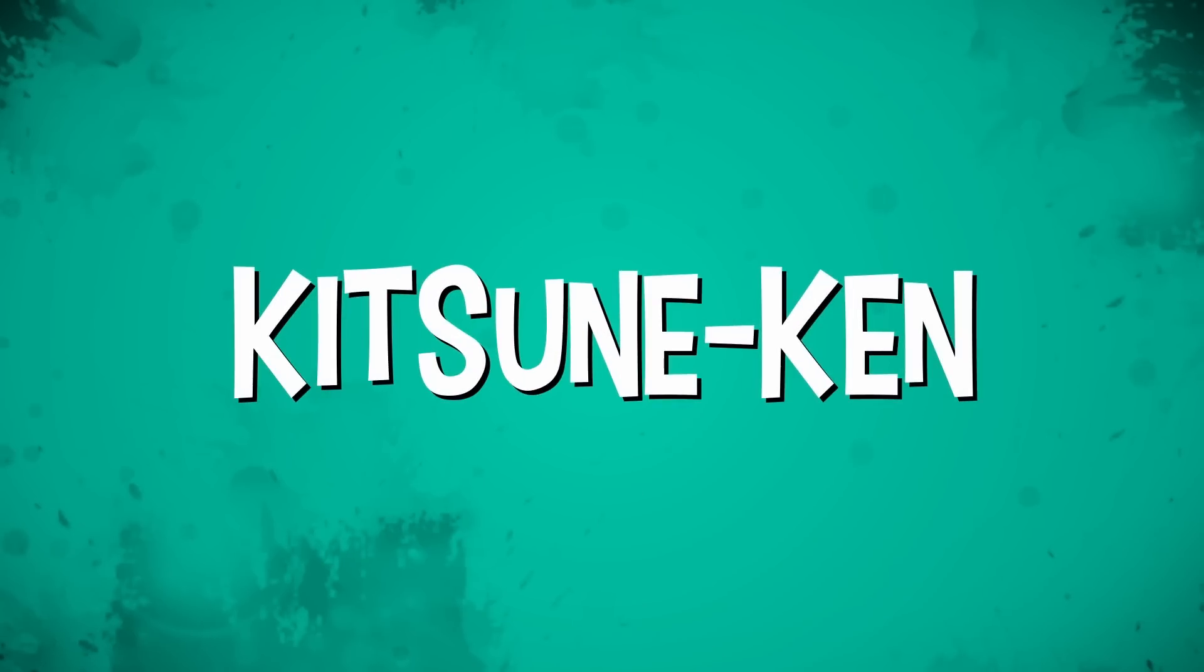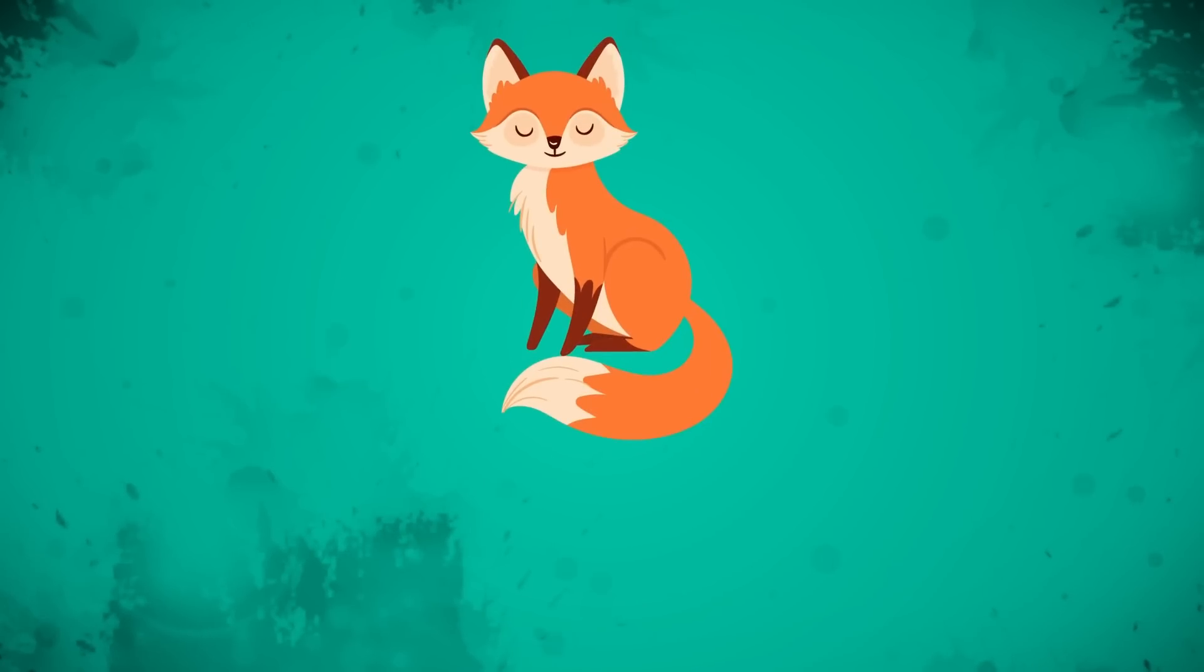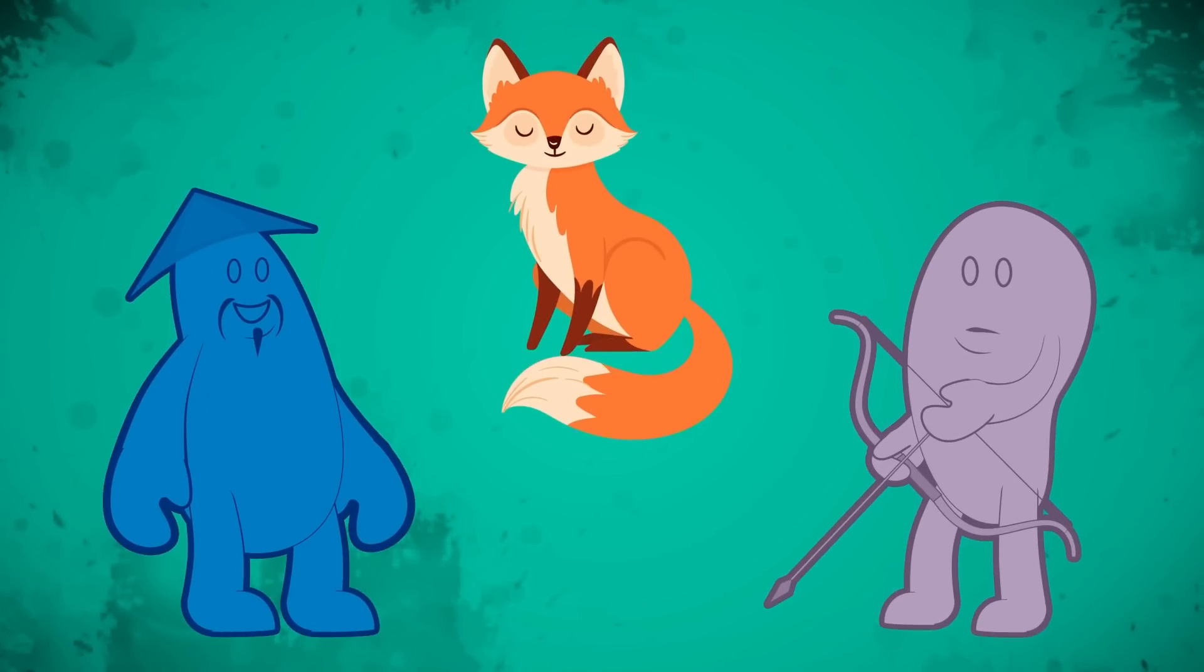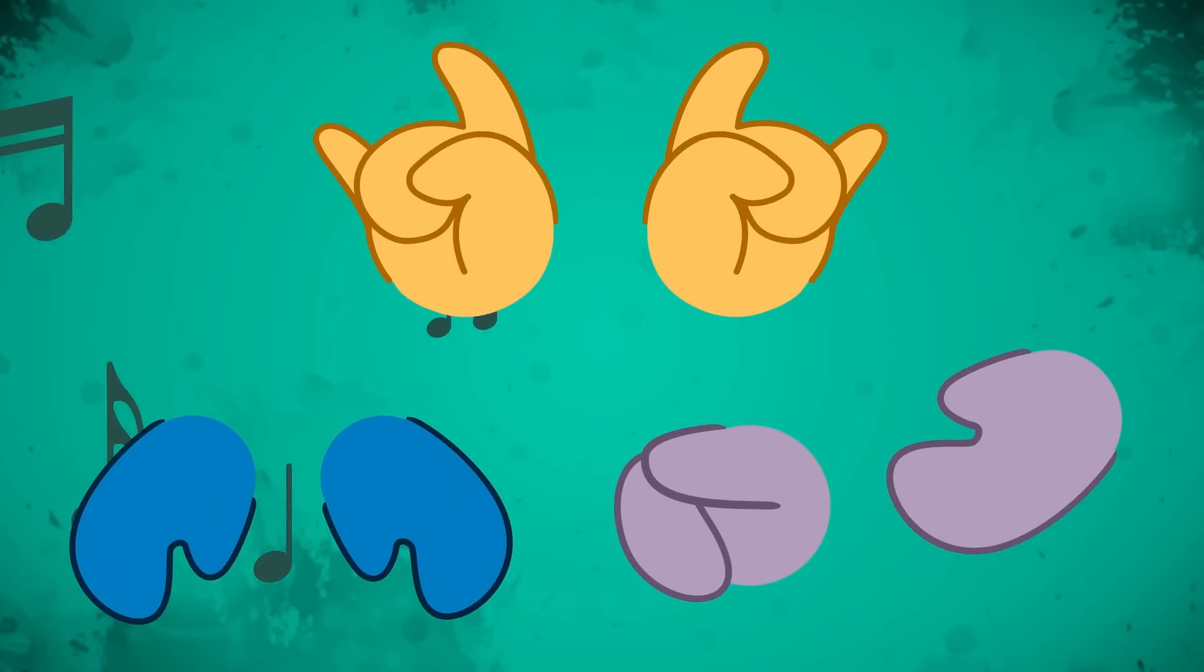Another hand game, Kitsune-ken, involved a magical fox, a village leader, and a hunter. The game was set to music, and on the beat, players must use both hands to create these shapes.